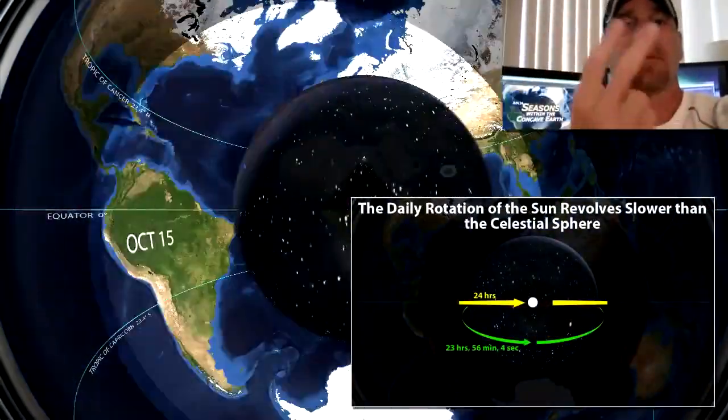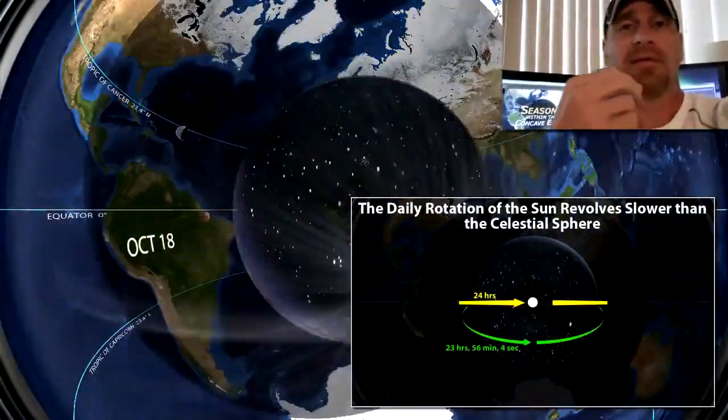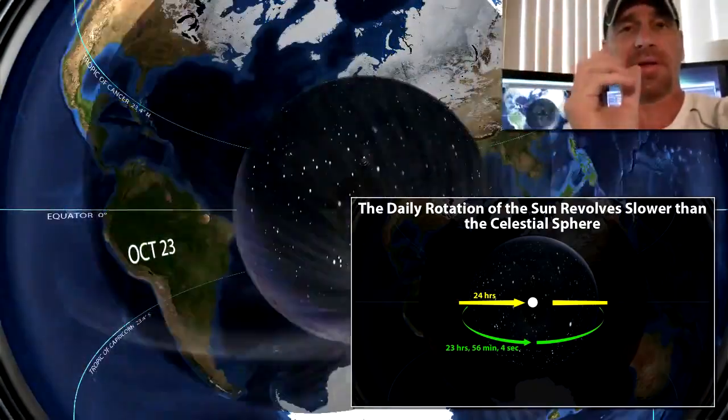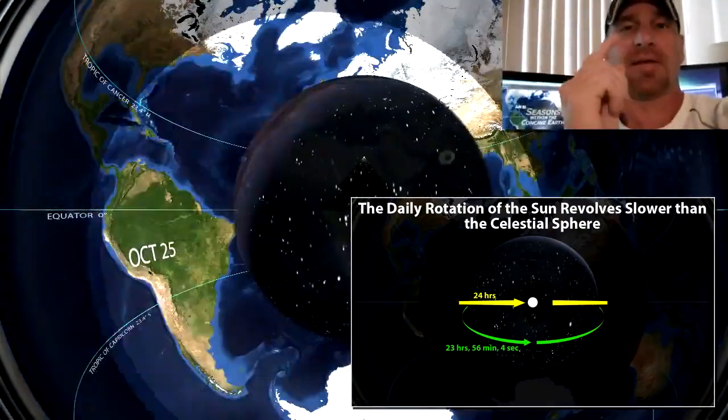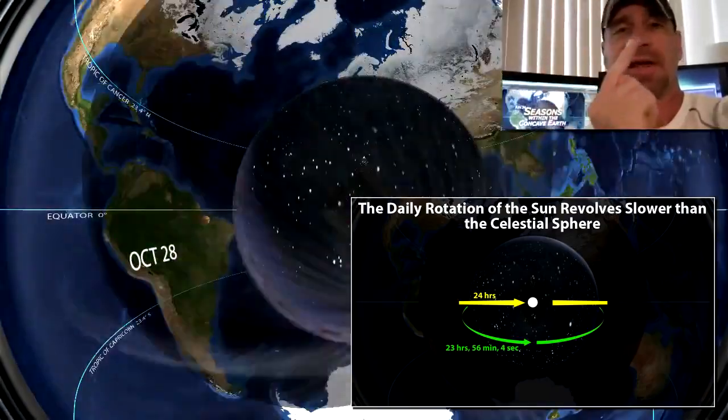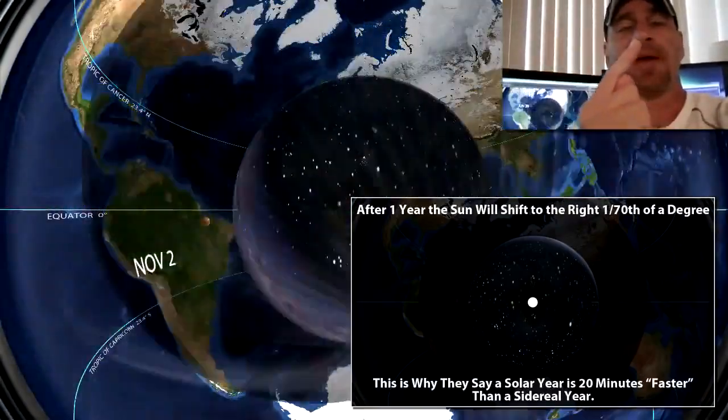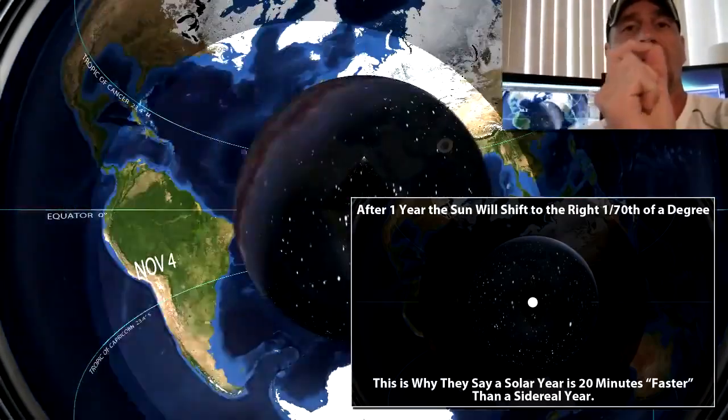The velocity of the Sun and the velocity of the celestial sphere, which is slightly faster than the Sun. A sidereal year or sidereal day is four minutes faster than the Sun, so after a full year's time the Sun is simply just going to be 1/70th of a degree in a different location than the year before.